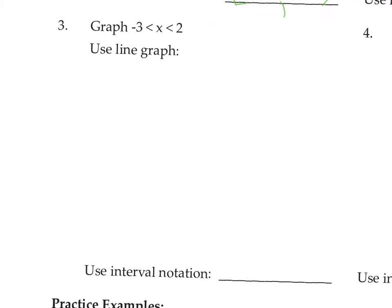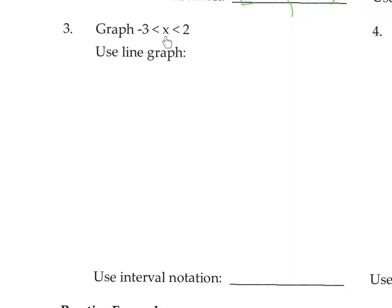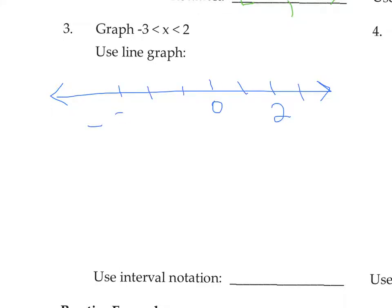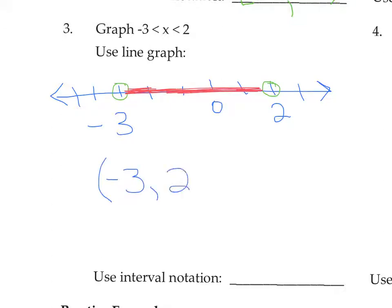On number 3, we're going to graph. This is a compound inequality because there are two symbols here. Negative 3 is less than x, and x is less than 2. The important numbers are negative 3 and positive 2. They are both open because there's no equal to bar. x is less than 2 but greater than negative 3, so there's the shading. The interval notation will be open at the left boundary, negative 3, and also open at the right boundary of 2.